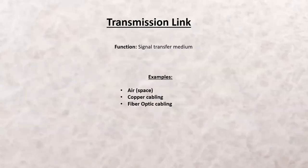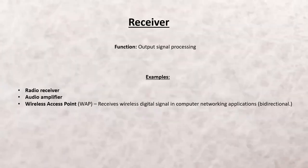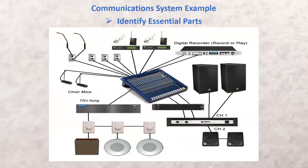For transmission links, we'll distinguish three basic types: air or space, copper cabling, and fiber optic cabling. In this course we're going to spend considerable time on copper cabling and fiber optic cabling. Air we won't cover as much in this course.